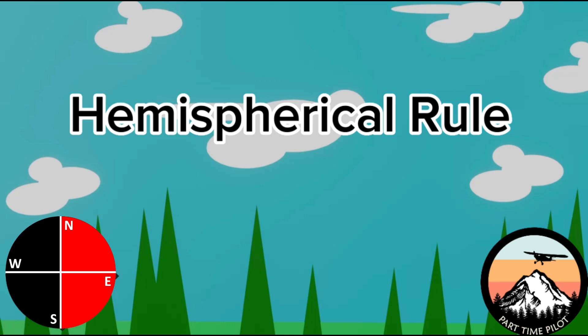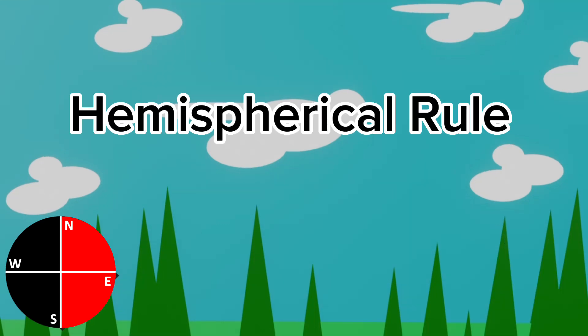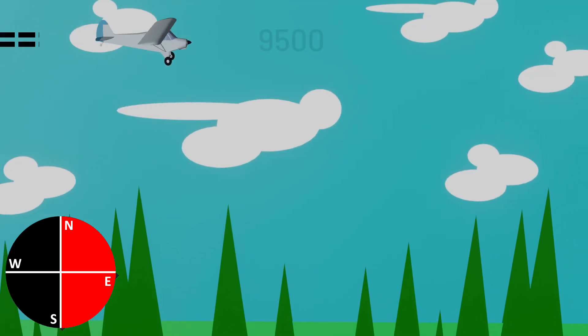So depending on which course you're traveling, and again that's a magnetic course, you need to abide by this rule at a specific altitude. This is only applicable when you're in cruise flight and you're above 3,000 feet AGL. So let's get into what the Hemispherical Rule means, whether you're traveling on a magnetic course easterly or magnetic course westerly.